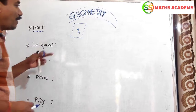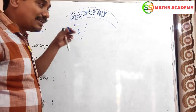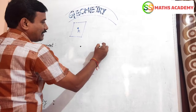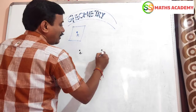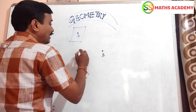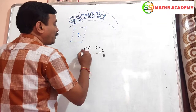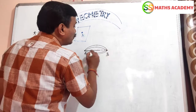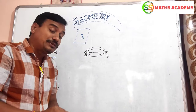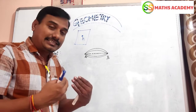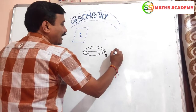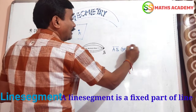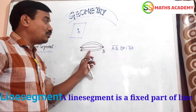Points are represented by capital letters only. Now let us see the next concept. I have two points in a plane. The shortest distance between these two points — when we join them — is called a line segment. A line segment AB is written as AB or BA.